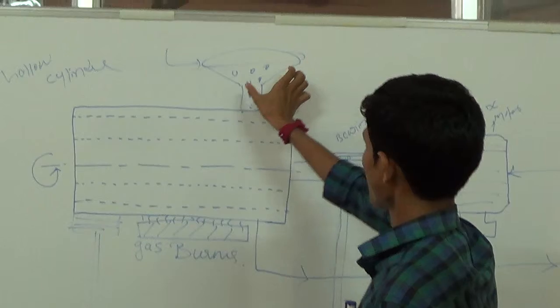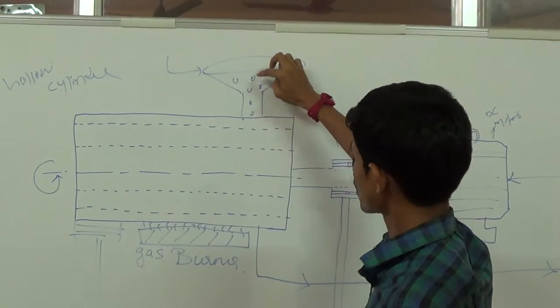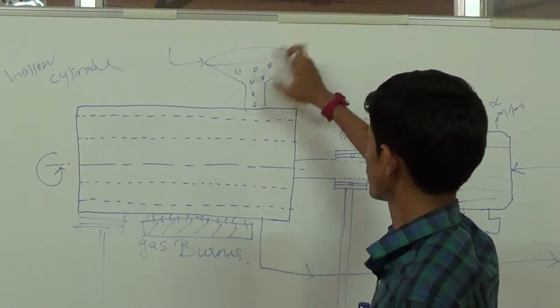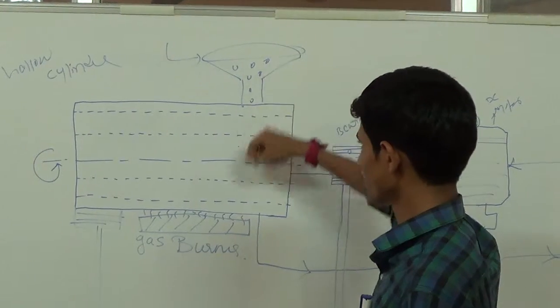Above this on the top is a hopper through which the paddy rice will pour into the hollow cylinder.